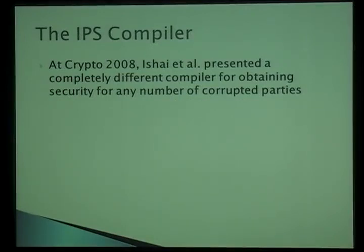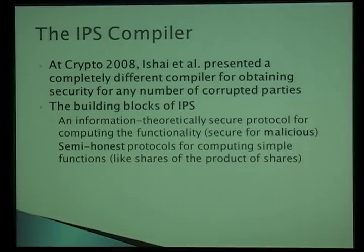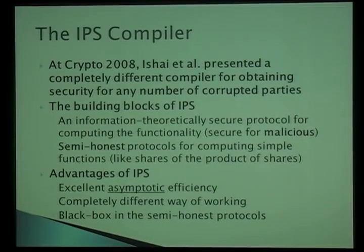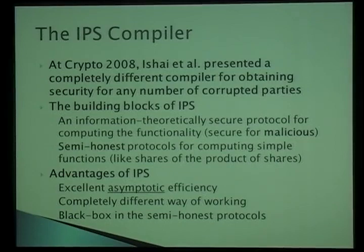In 2008, Ishai, Prabhakaran, and Sahai at CRYPTO presented a completely different compiler for obtaining security against malicious adversaries for any number of corrupted parties. The building blocks are an information-theoretic protocol secure in the presence of an honest majority — possibly two-thirds or greater — and semi-honest protocols for computing simple functions like the product of shares. The advantages of IPS include excellent asymptotic efficiency and the fact that it works in a completely different, black-box way.